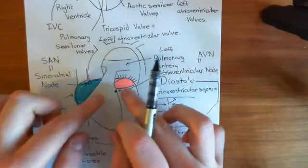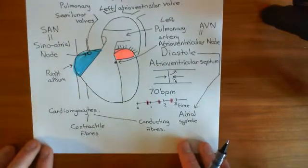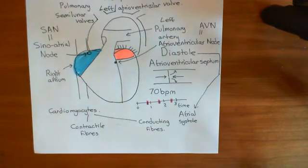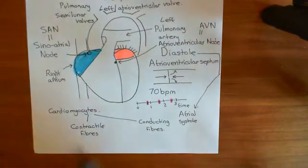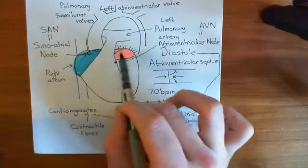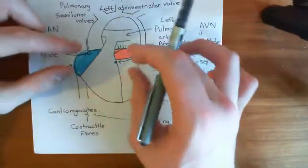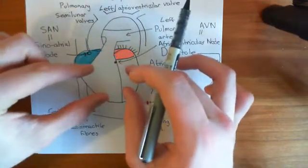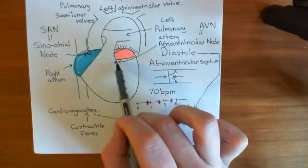The action potential spreads through the atria and then reaches these conducting cardiomyocytes. These are cardiomyocytes which are not contractile — their function is in spreading the action potential along the cardiac tissue. The electrical signal propagates through the AV node really, really slowly, because you have to wait for both atria to completely contract before the ventricles fire.